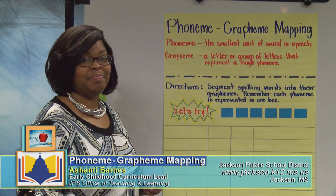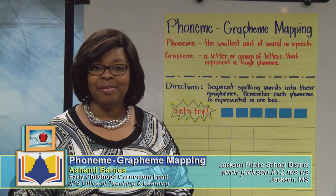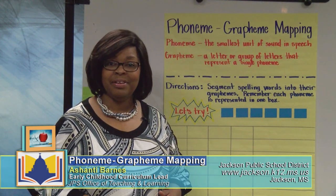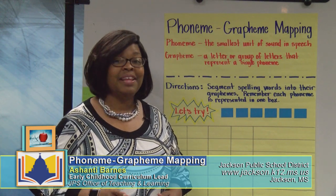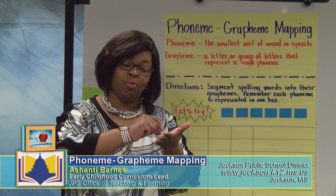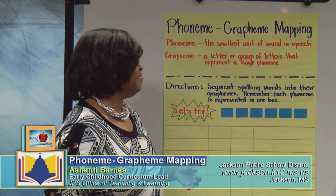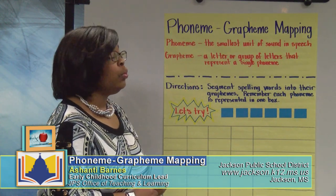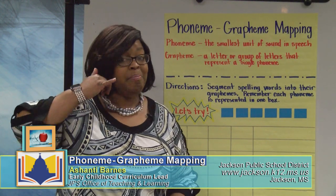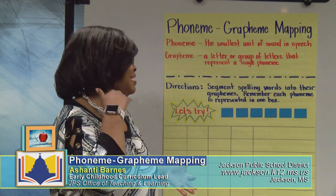Next we have Grapheme. Can you say Grapheme with me? Do you hear another word inside of Grapheme? Absolutely — Graph. This would be our symbol for graph, as if we are writing, or a written representation of a sound. Grapheme is a letter or group of letters that represent a single phoneme. So phoneme means sound and grapheme means to write what you heard, or the sound.